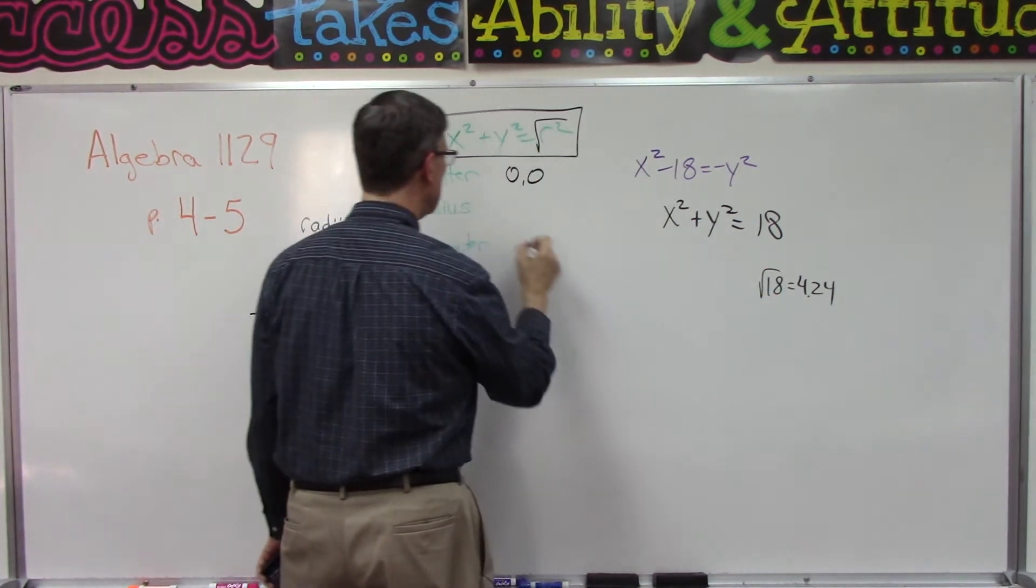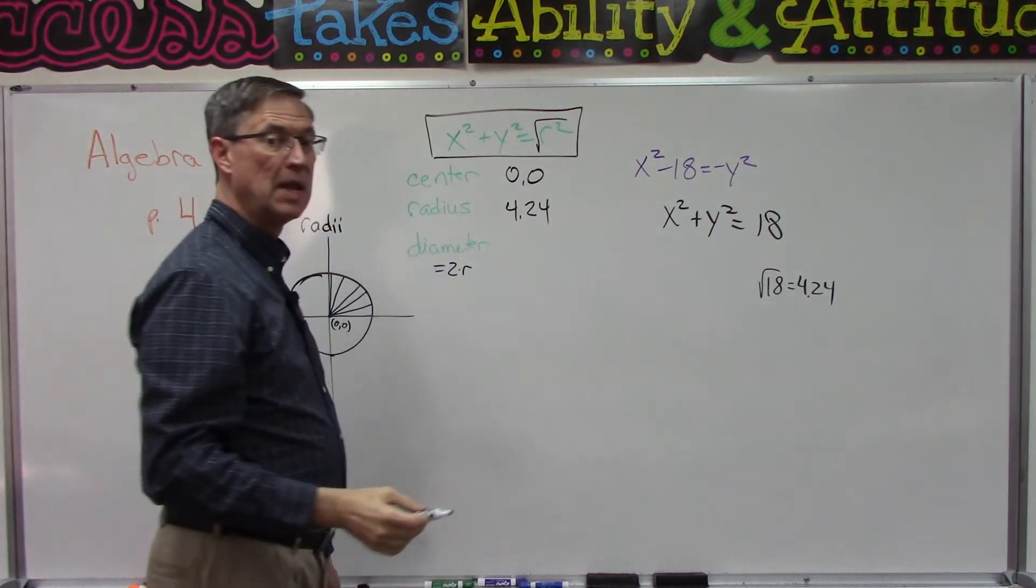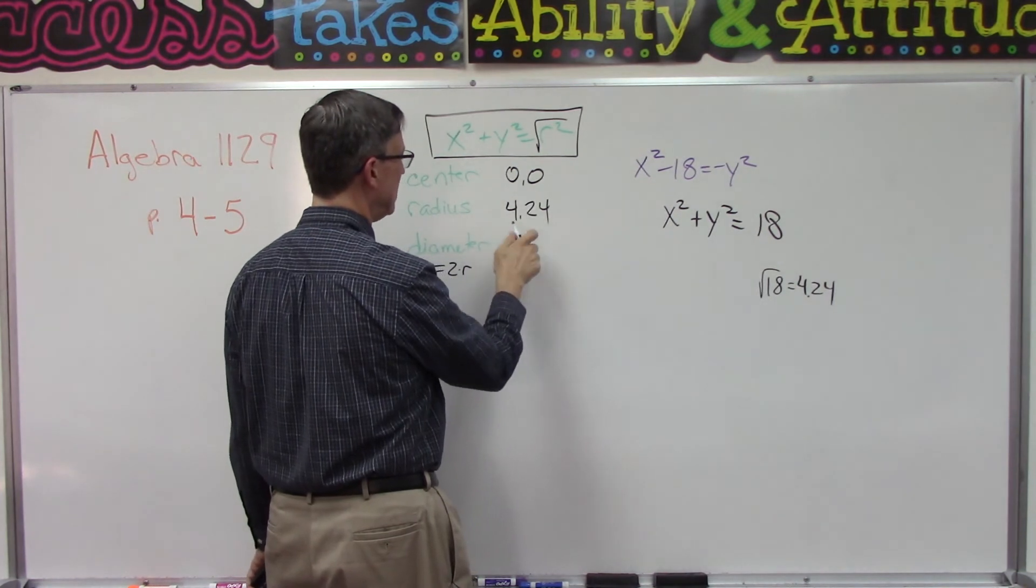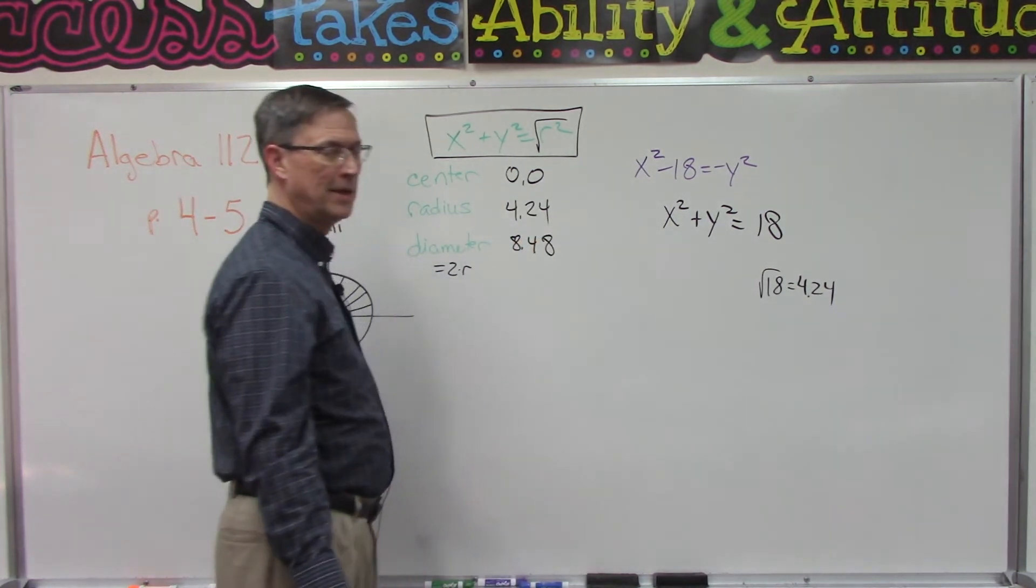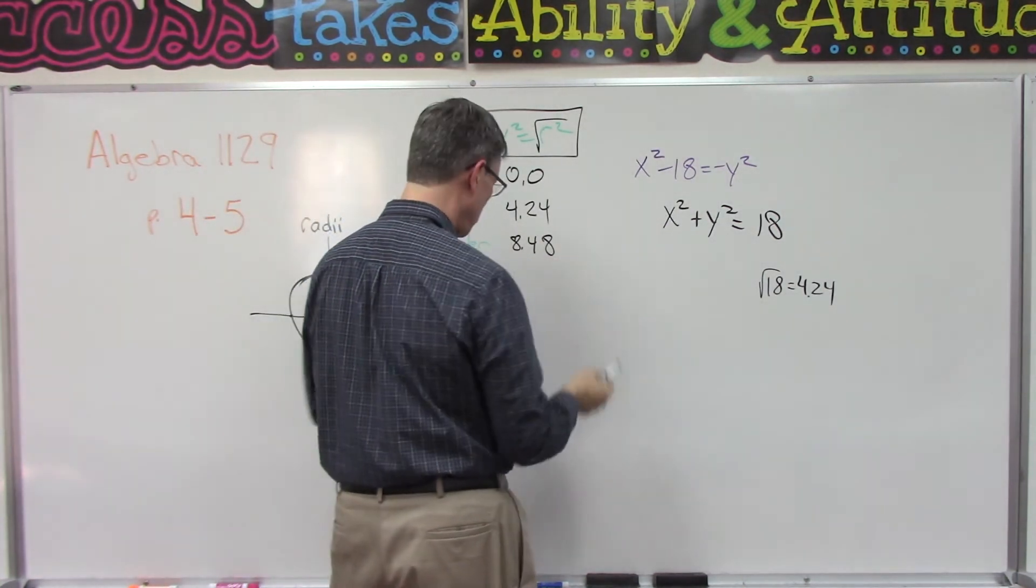Okay, so this means that the center will be zero zero, this radius would be 4.24, and then the diameter is going to be twice this. So I can do this in my head. Okay, now we're supposed to graph that.